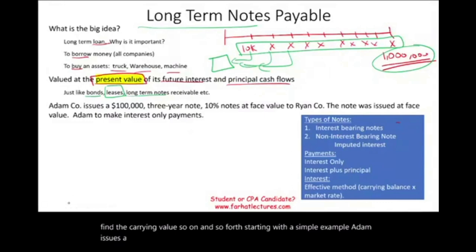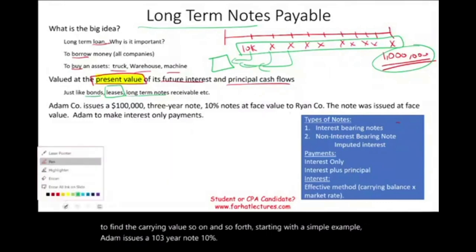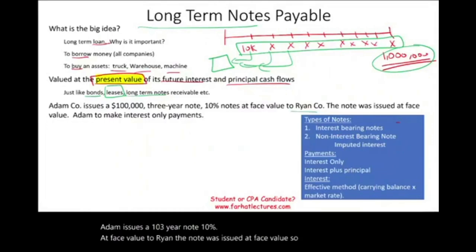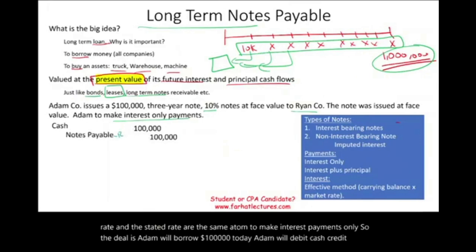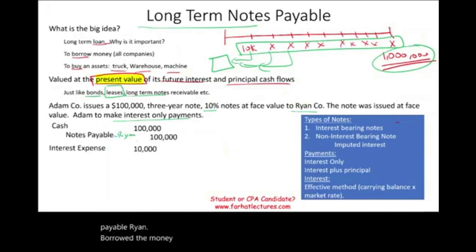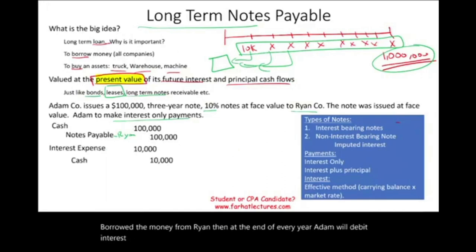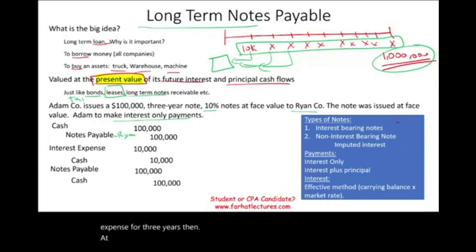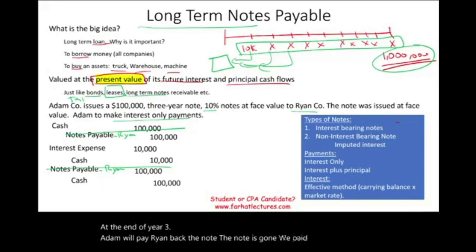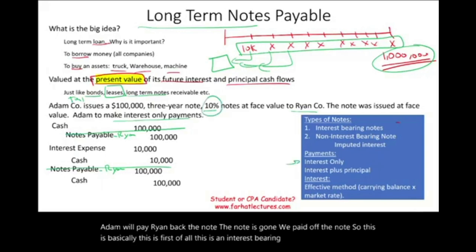Example 1: Adam issues a $100,000 three-year note at 10% at face value to Ryan. The note was issued at face value, so the market rate and stated rate are the same. Adam will make interest payments only. Adam debits cash and credits notes payable for $100,000. At the end of every year, Adam debits interest expense and credits cash for $10,000. Then at the end of year three, Adam pays Ryan back the full principal. This is an interest-bearing, interest-only loan.